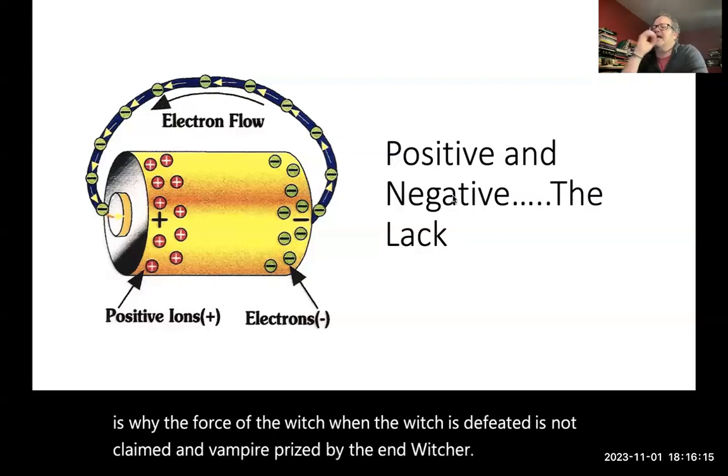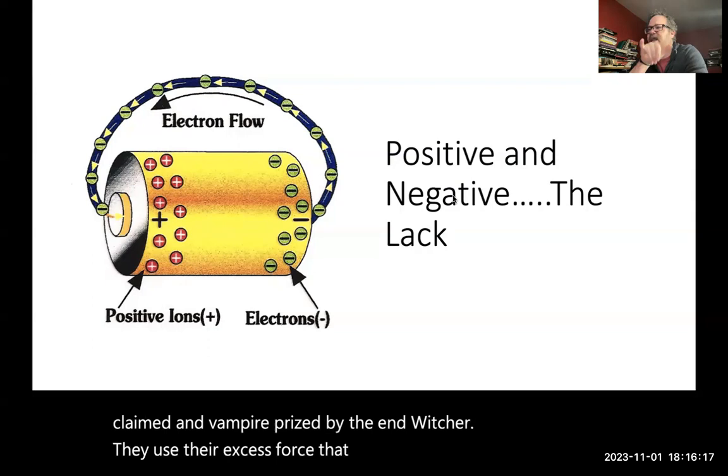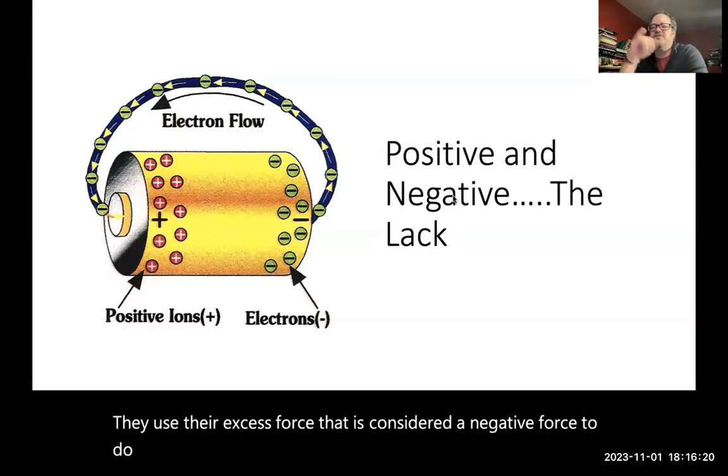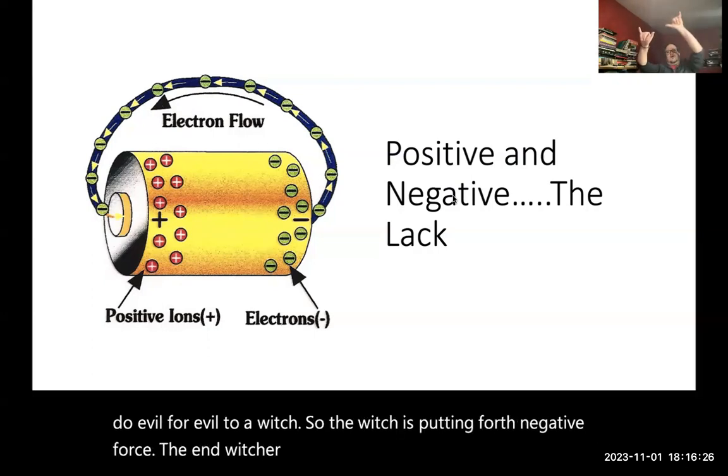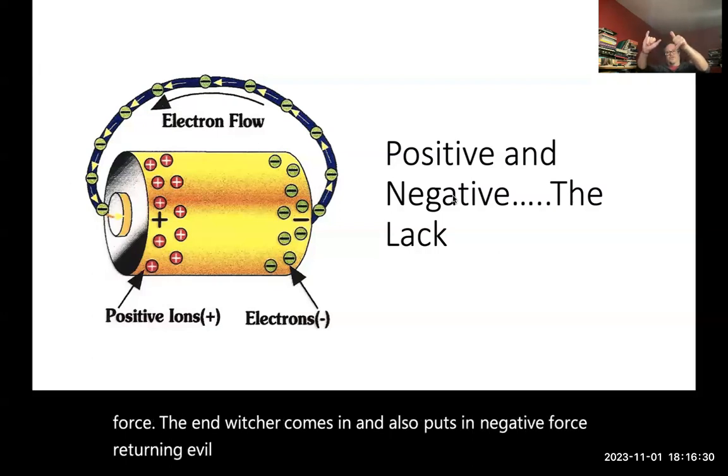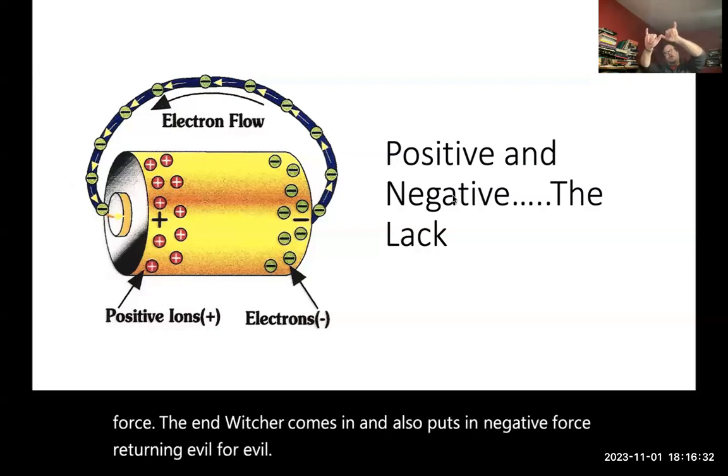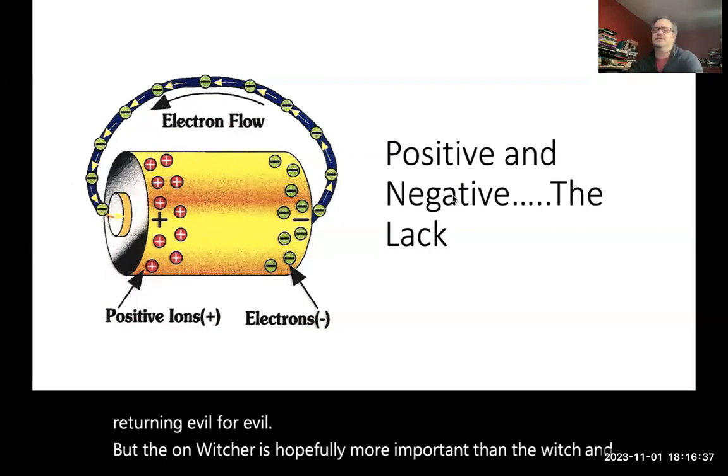They use their excess force that is considered a negative force to do evil for evil to a witch. So the witch is putting forth negative force. The unwitcher comes in and also puts in negative force, returning evil for evil. But the unwitcher is hopefully more powerful than the witch and overwhelms the witch.